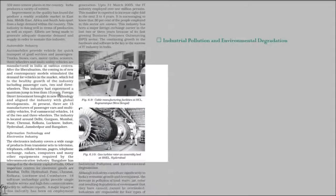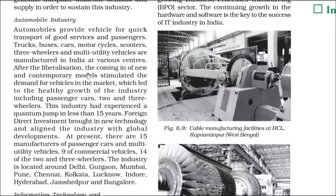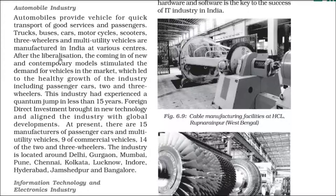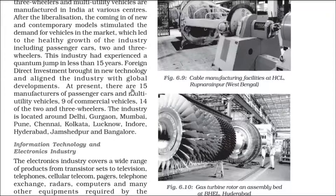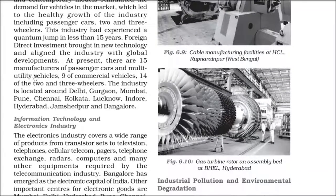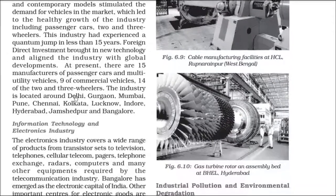Automobile industry: after liberalization in 1991, giant automobile companies were allowed to enter the Indian market through foreign direct investment (FDI). Cars and parts are now being made in India. FDI brought new technology and global developments. There are 15 manufacturers of passenger cars and multi-utility vehicles, 9 for commercial vehicles, and 14 for 2 and 3 wheelers. Automobile industries are mainly located in Delhi, Gurgaon, Mumbai, Pune, Hyderabad, Jamshedpur, and Bangalore.